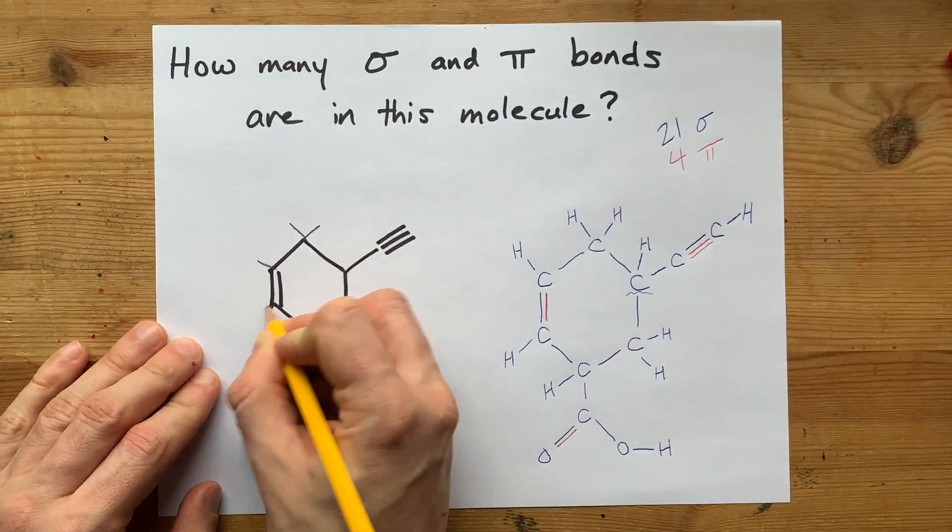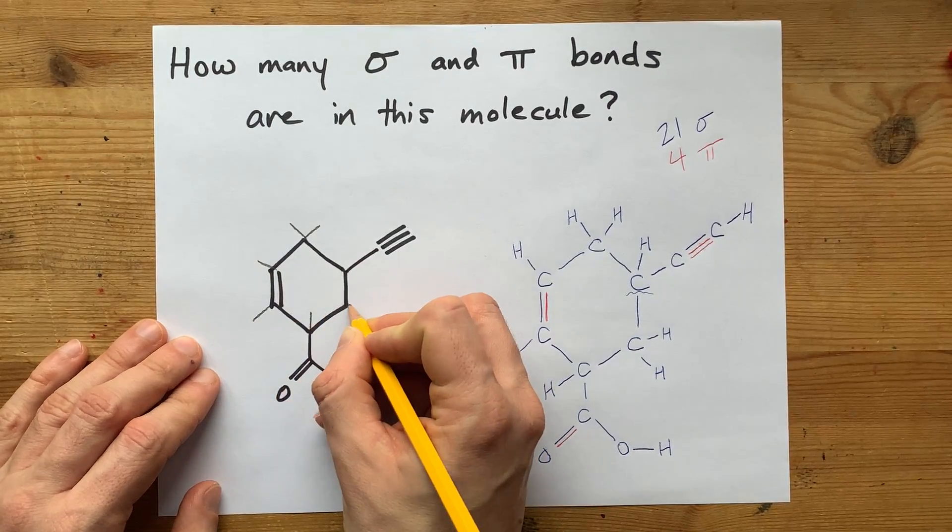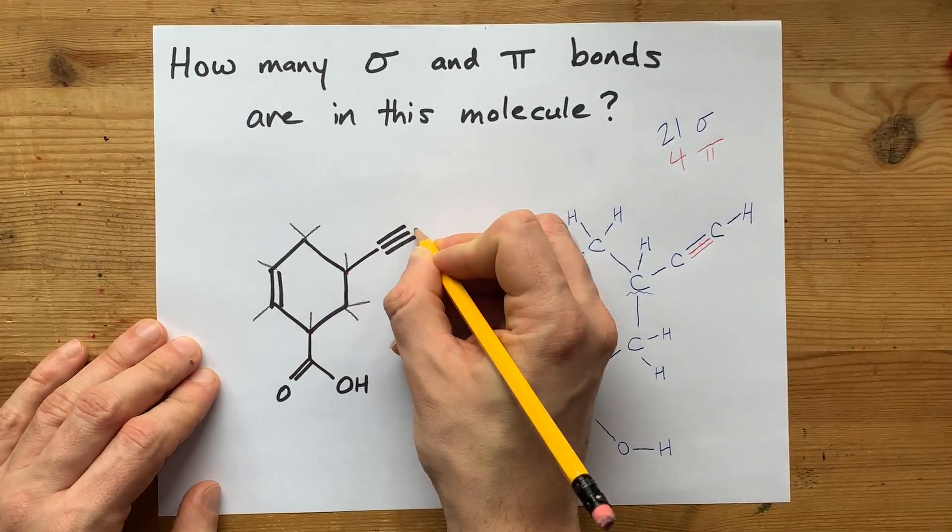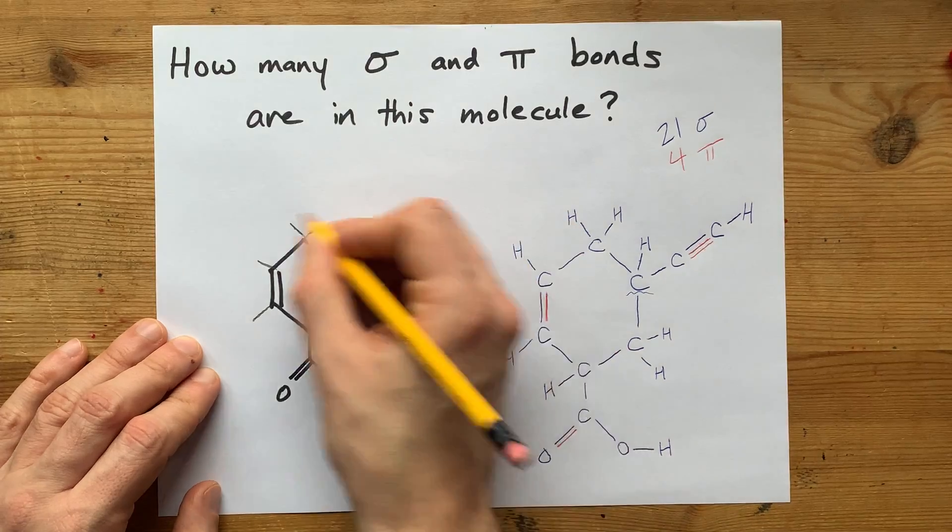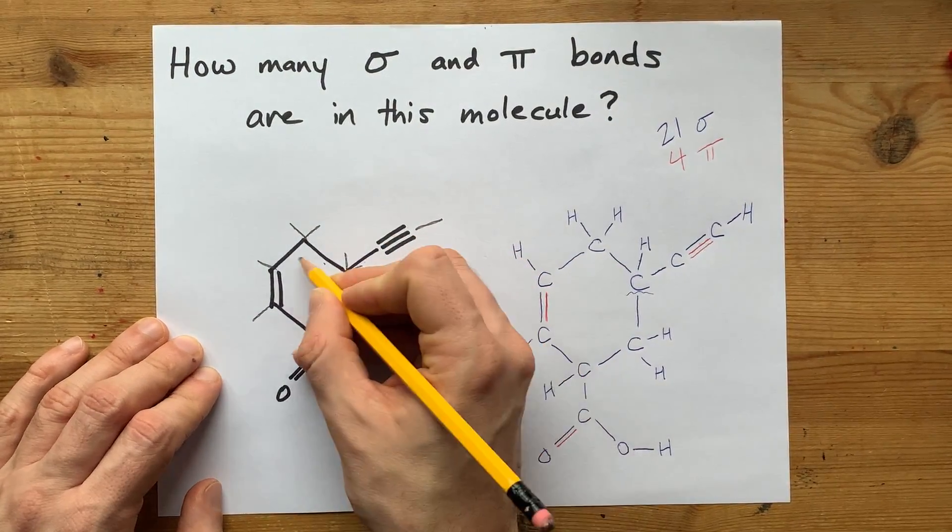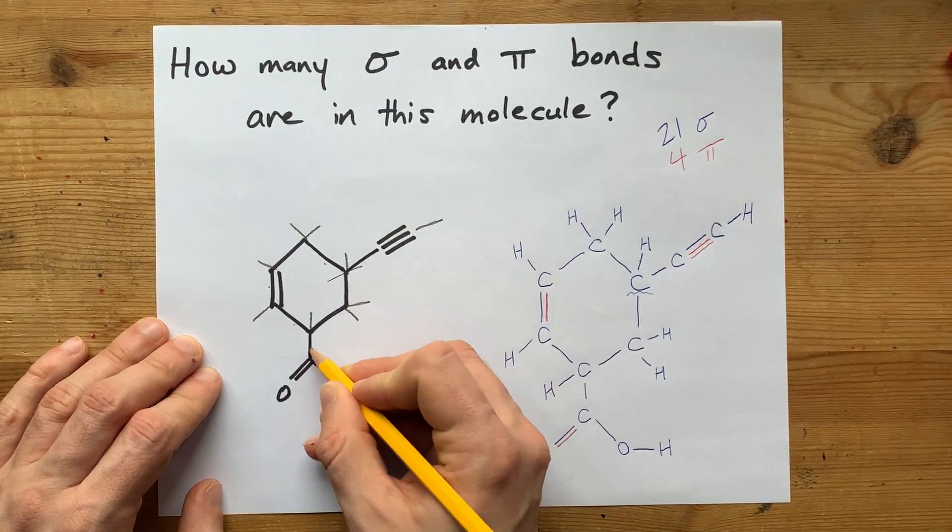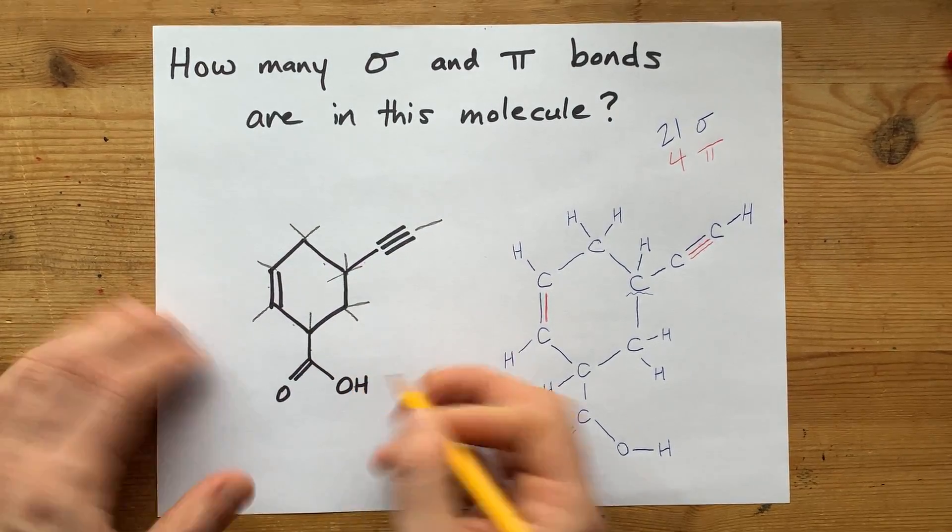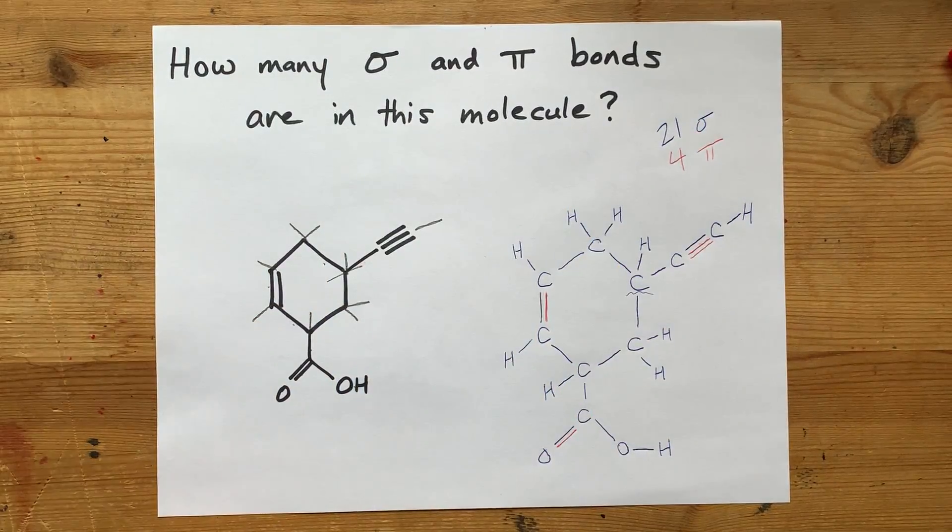One, two, three, four, five, six, seven, eight, nine. That's nine hydrogens that weren't shown. Ten, eleven, twelve, thirteen, fourteen, fifteen, sixteen, seventeen, eighteen, nineteen, twenty, twenty-one. Yeah, you know what? I double-checked it. Twenty-one sigma bonds.